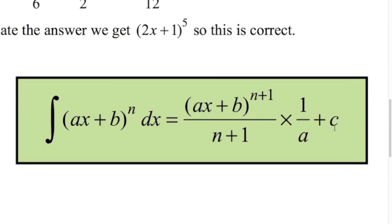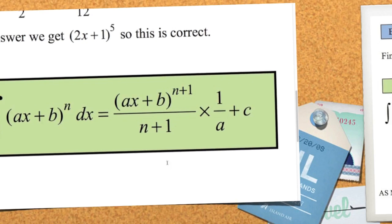Here's the formula you'll use for the reverse chain rule. You've got the integral of ax plus b to the power of n. As we did last time, we add 1 to the power, divide by that new number, the ax plus b stays the same, and we multiply by 1 over the number in front of the x. This is a very useful formula to remember and understand.